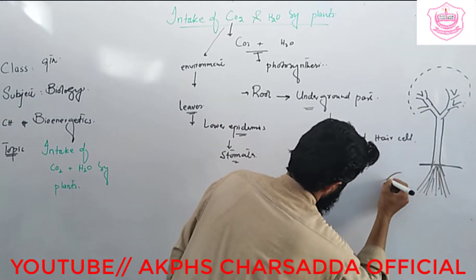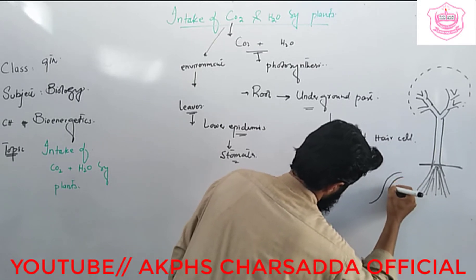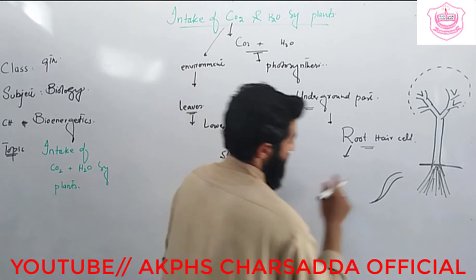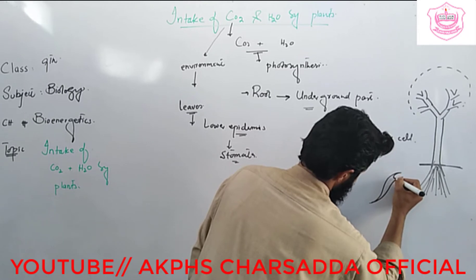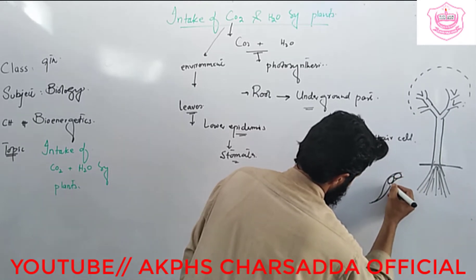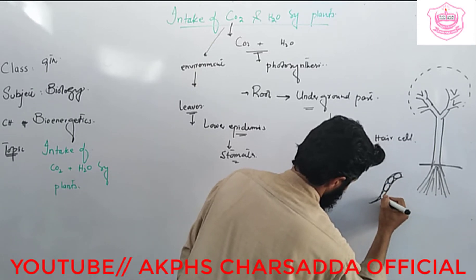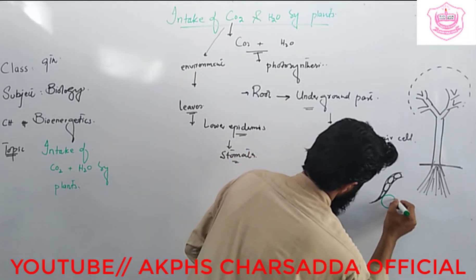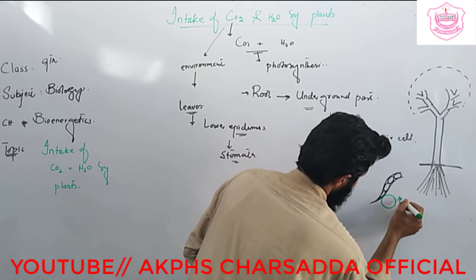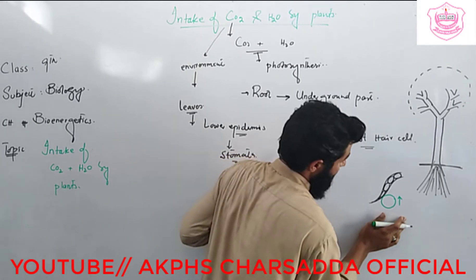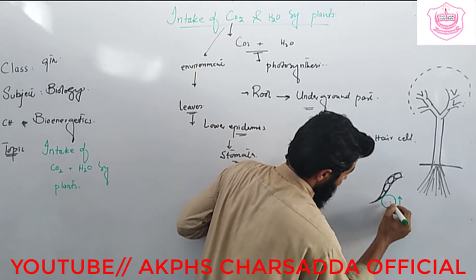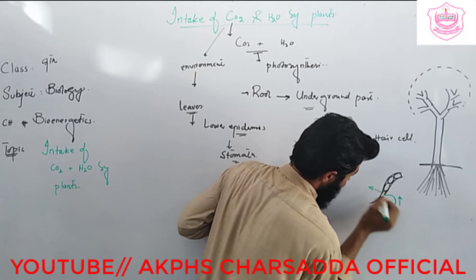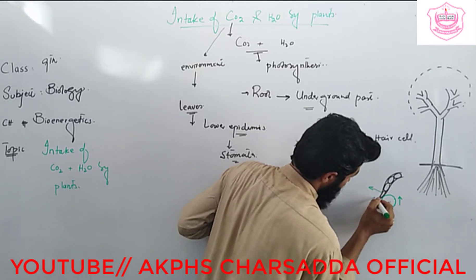The root has hair-like structures that arise from it, and these are known as root hair cells. If you study the arrangement of the cells in the root hair cell, the cells are arranged so that the root hair cells come directly in contact with the soil particles. Inside the soil particles, water is present, and the transport of water depends on the concentration of water in the soil particle. If the soil particle has a high concentration of water compared to the cell of the root hair, the water will move from the soil particle toward the root hair cell.